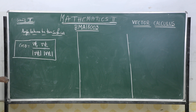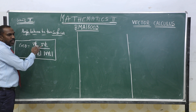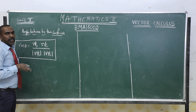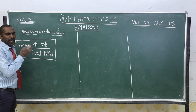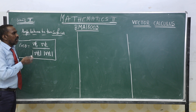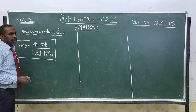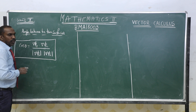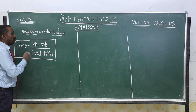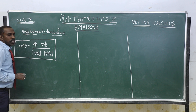Here φ₁ is the first surface and φ₂ is the second surface. We have to find out the angle between the two surfaces. This is one of the applications of vector calculus. Now that we know the formula, we will discuss the angle between two surfaces.